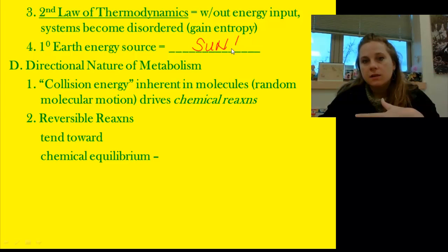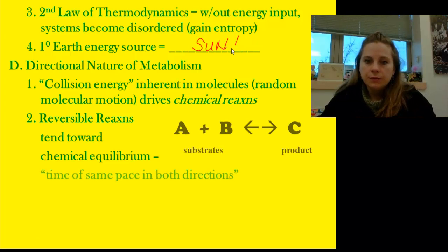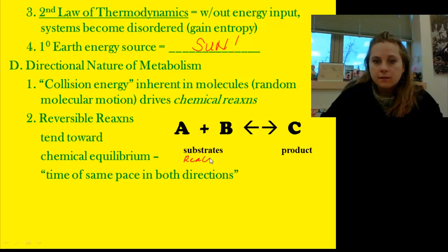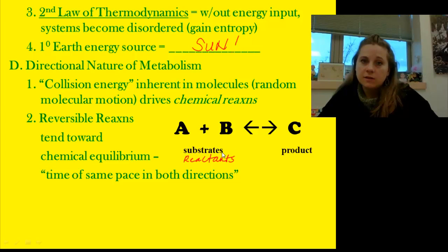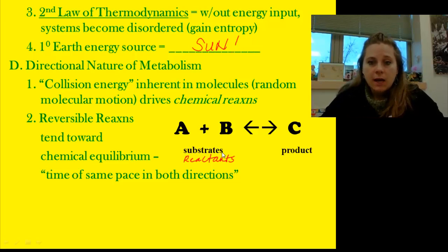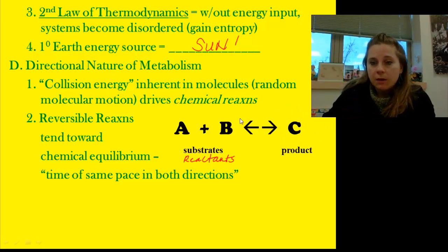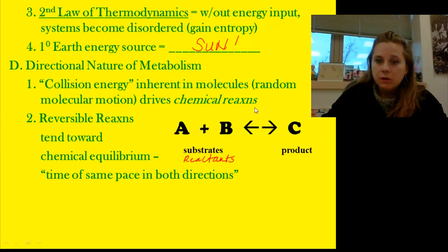That reversibility lends itself toward chemical equilibrium. I can take substrates — also known as reactants — and create them into a product, but I can also take my product and break it down into the substrates that built it up. Enzymes are critical to cause these reactions to happen.